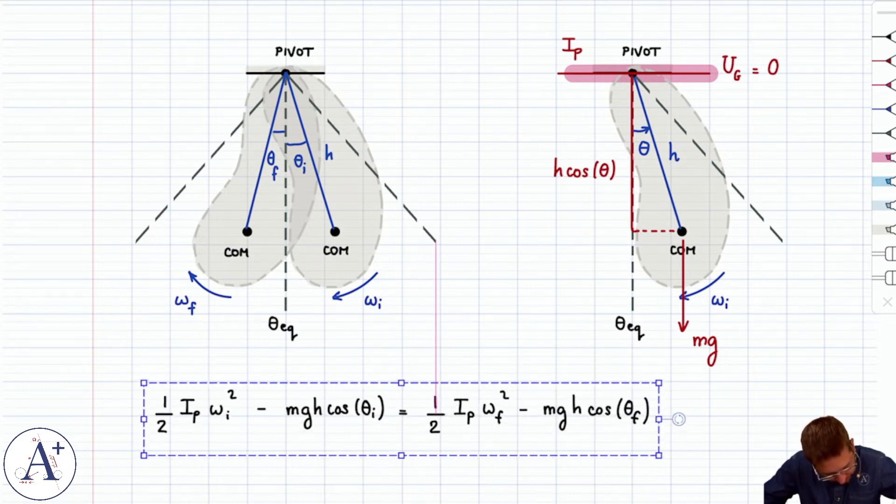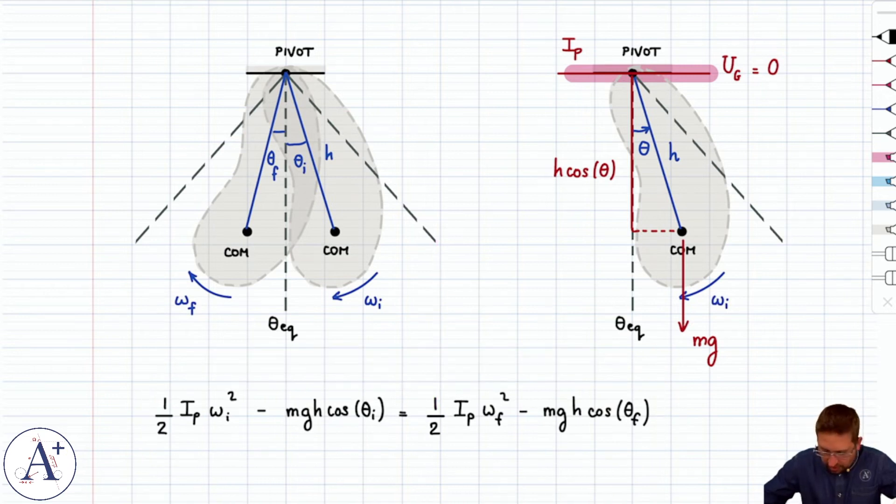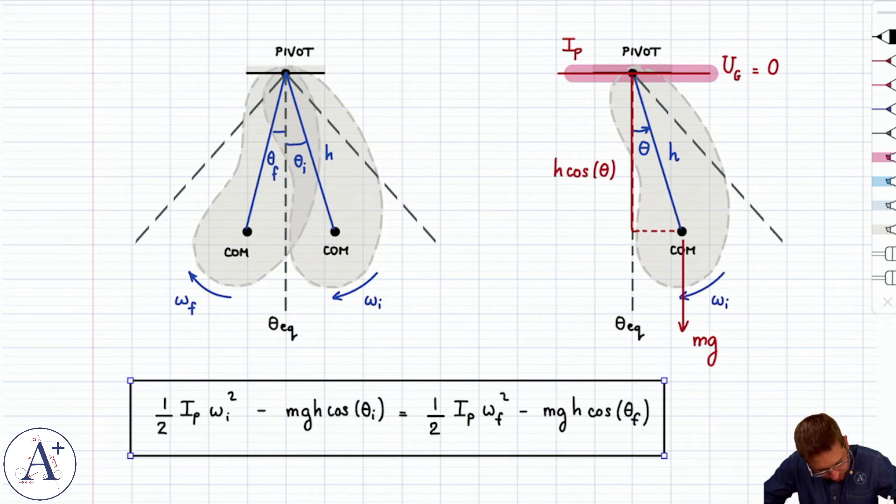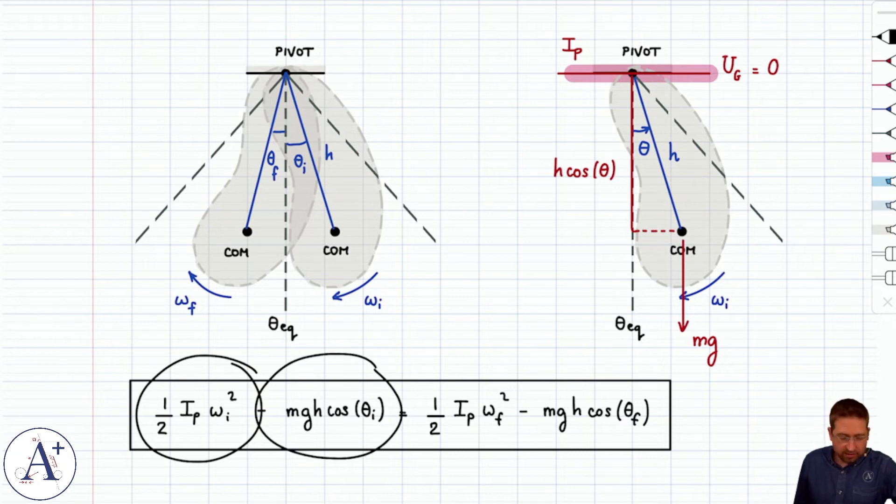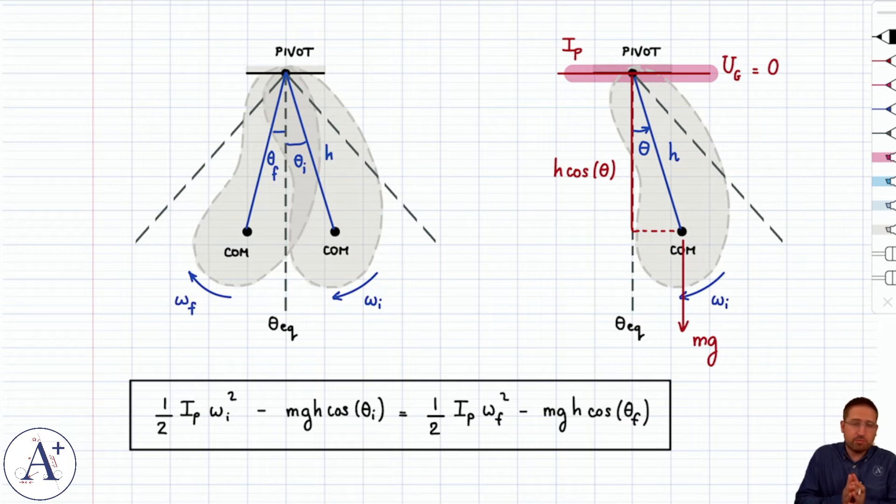Now, of course, as we've said before, the art of applying conservation of mechanical energy is choosing two points that are perhaps more interesting and more informative than the arbitrary two points that I chose here, but my goal was simply to show that you have rotational kinetic energy and gravitational potential energy. And so, at any moment in time, the mechanical energy is split between the two.